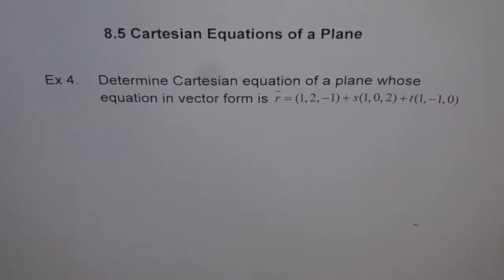Example 5. Determine Cartesian equation of a plane whose equation in vector form is r equals 1, 2, minus 1, plus s times 1, 0, 2, plus t times 1, minus 1, 0.